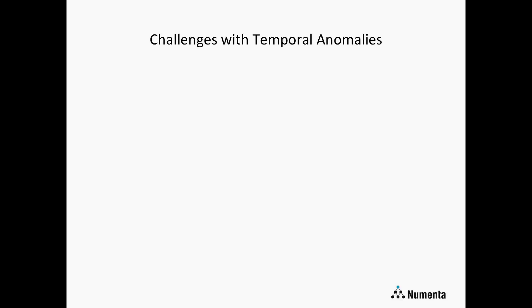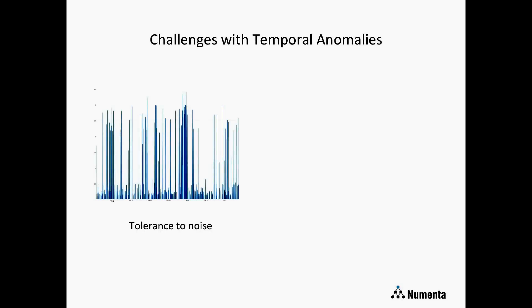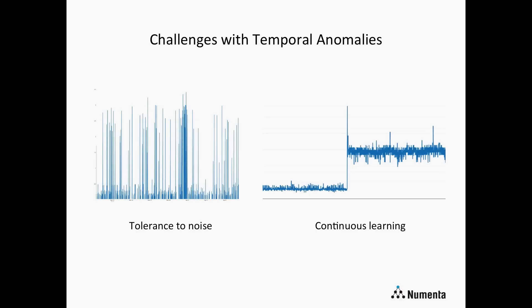There are some challenges with temporal anomalies. One is dealing with noise or unpredictable data. In this example you can visually distinguish the anomalous period, but because there are all these spikes — this is latency on a load balancer — it's very unpredictable and difficult to know when those are going to occur. You have to be able to detect changes in the distributions of the data amidst all this noise. In addition, in real-world data it's constantly changing, so you have to be able to update as the data changes.